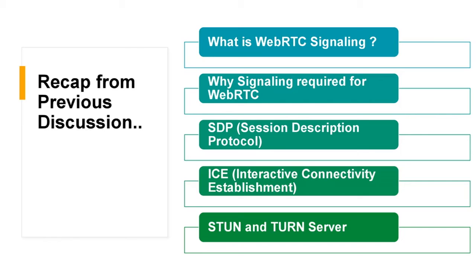ICE technique helps to communicate two nodes directly on the Internet. Basically, ICE is the technique which uses STUN and TURN protocols to establish a connection. STUN and TURN servers can be used to get a public IP address to establish a connection to the end user.